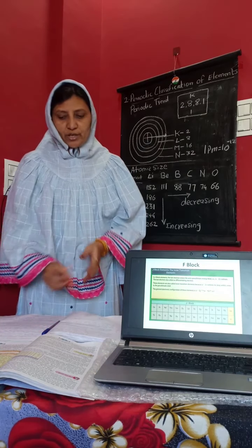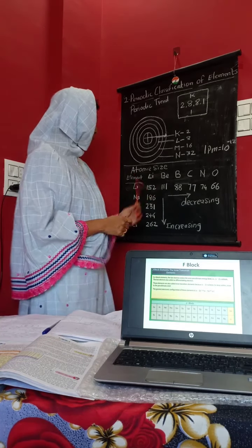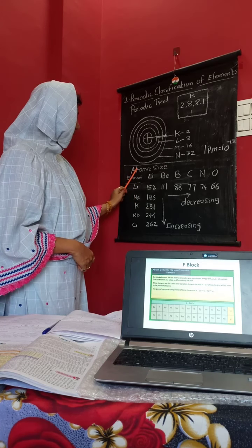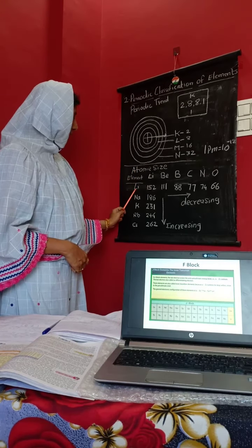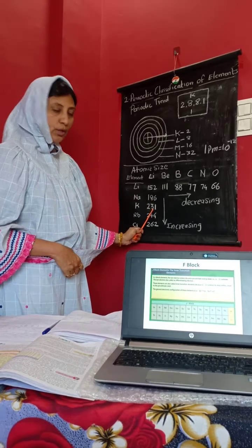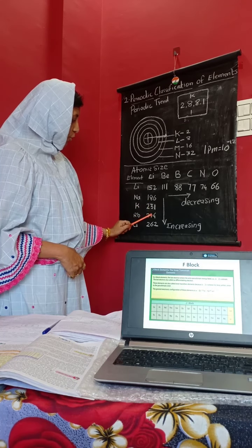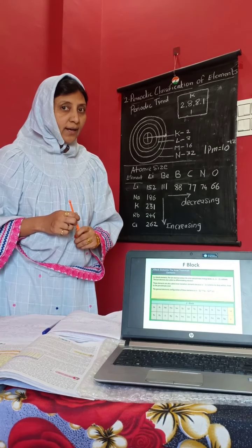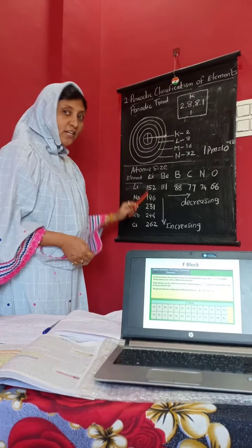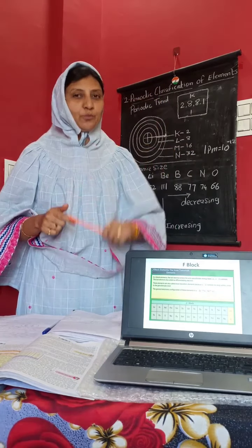Now let's look at the trend from top to bottom using a group as an example. Lithium has an atomic radius of 152, sodium 186, potassium 231, and it continues increasing — 244, 262. This shows that the atomic radius increases from top to bottom.